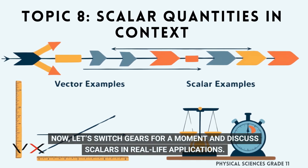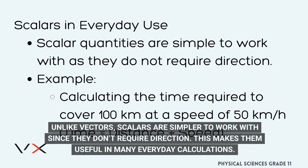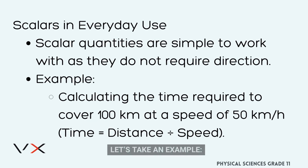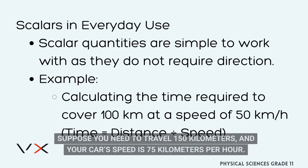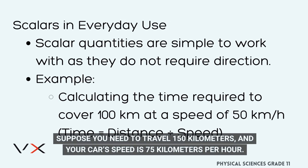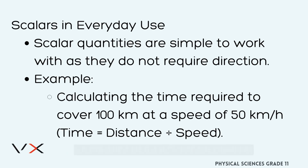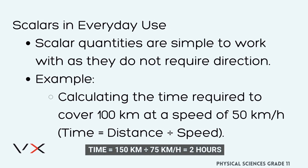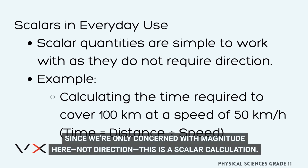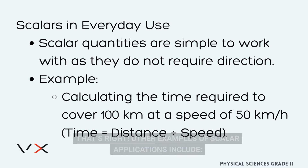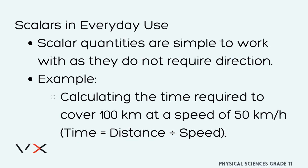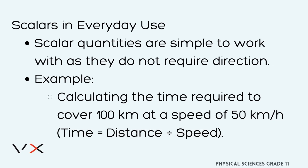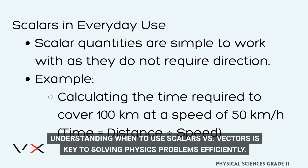Now let's switch gears and discuss scalars in real-life applications. Unlike vectors, scalars are simpler to work with since they don't require direction, making them useful in many everyday calculations. For example — calculating travel time: suppose you need to travel 150 kilometers and your car's speed is 75 km/h. Using the formula time = distance ÷ speed: time = 150 km ÷ 75 km/h = 2 hours. Since we're only concerned with magnitude, not direction, this is a scalar calculation. Other scalar applications include measuring mass in kilograms, calculating energy in joules, and recording time in seconds or hours. Understanding when to use scalars versus vectors is key to solving physics problems efficiently.